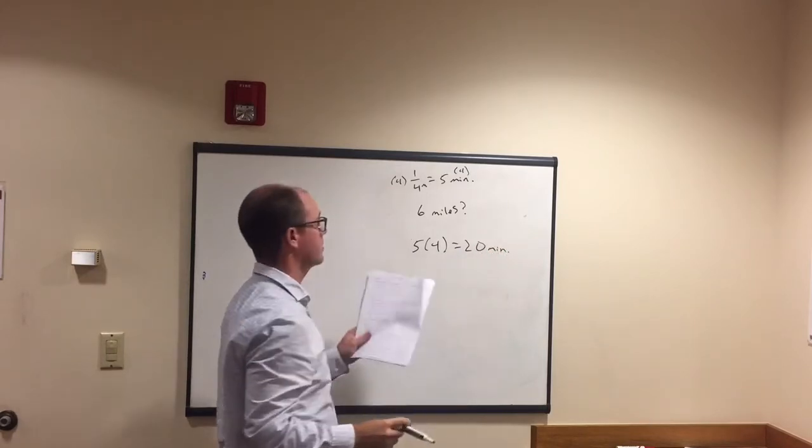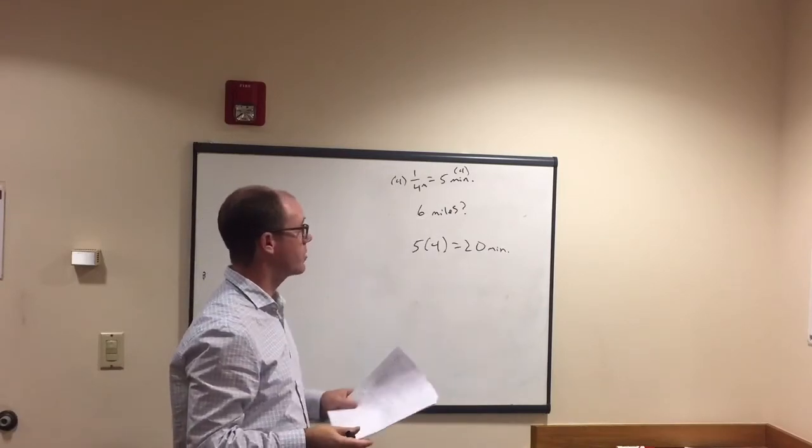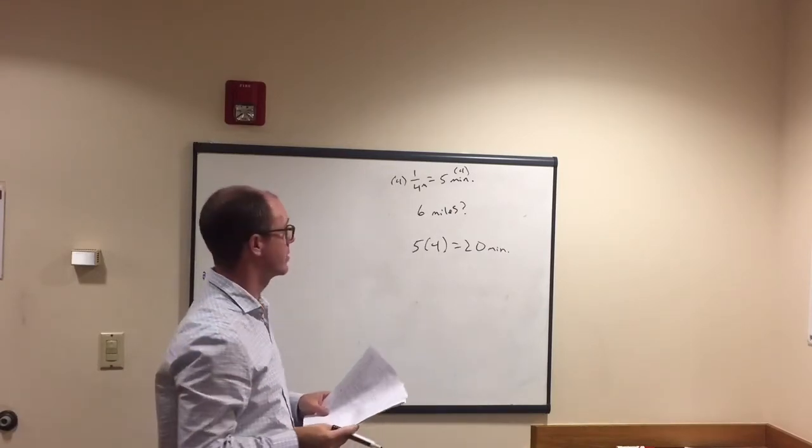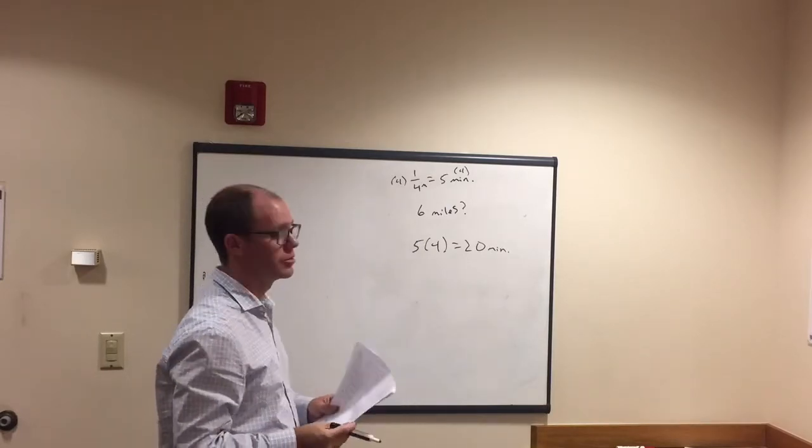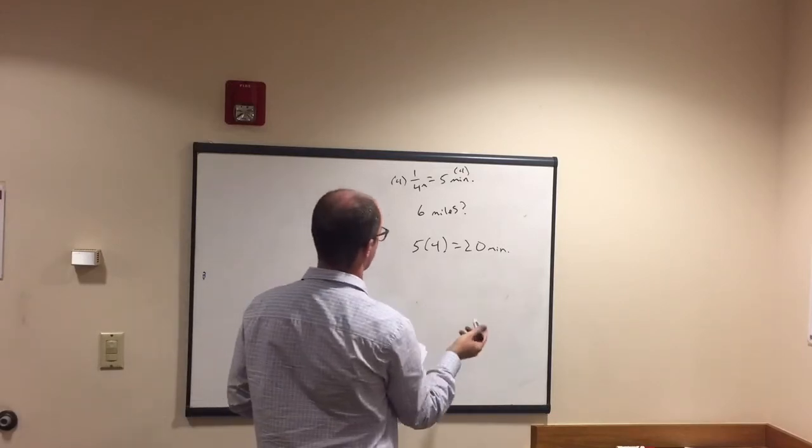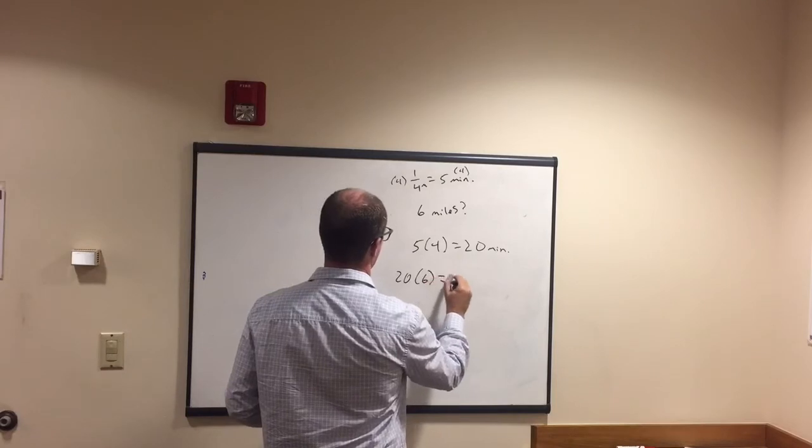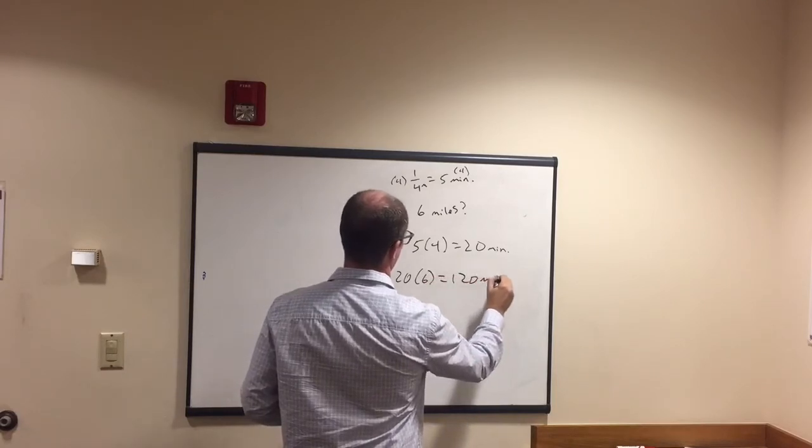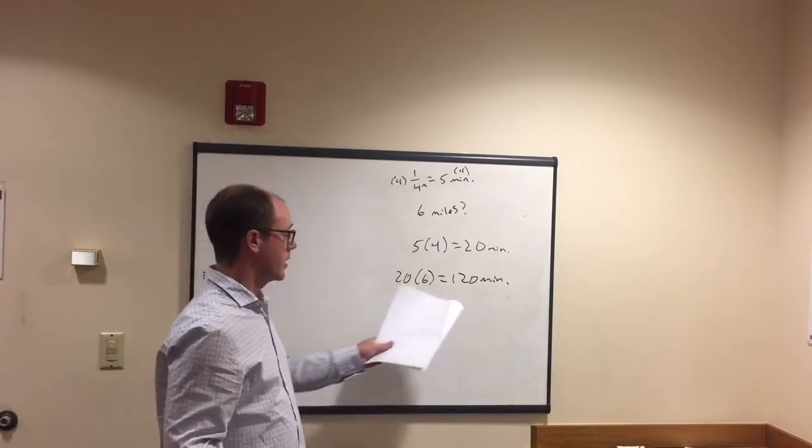And if you think this out, a quarter mile takes five minutes, half a mile would be ten minutes. Three quarters of a mile, 15 minutes. Full mile, 20 minutes. We're assuming the same rate this whole time. And then if we're trying to solve for six miles, if it was 20 for one, 20 times six equals 120 minutes. And that's our answer.